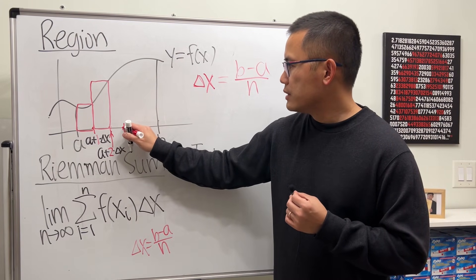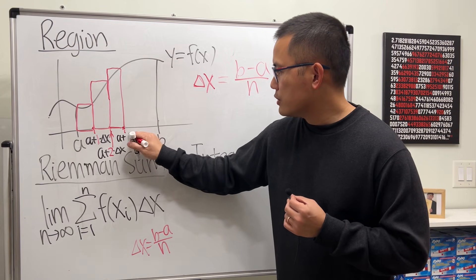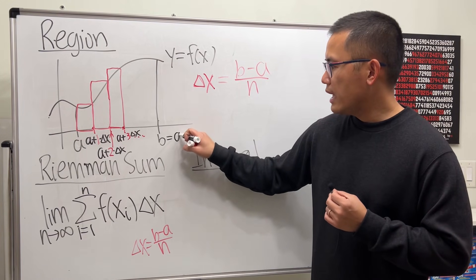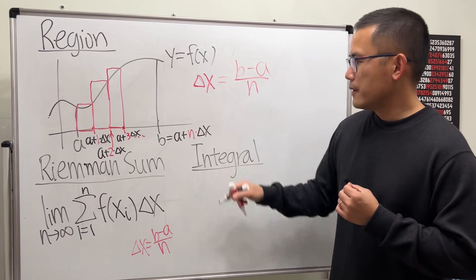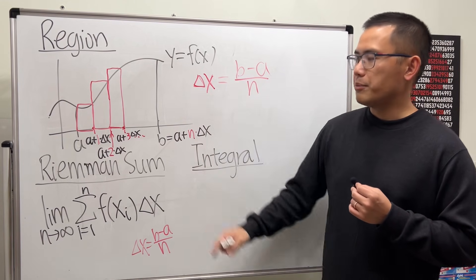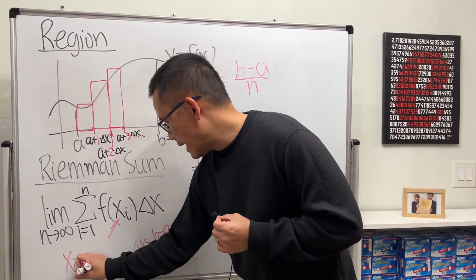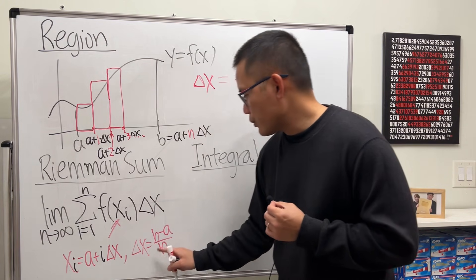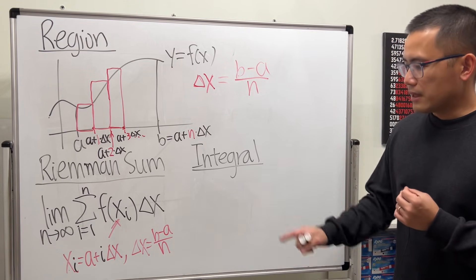Similarly for the next one: use that x-value, go up, draw the rectangle — that's a plus 3 times delta x. And the last one, b, equals a plus n times delta x. If you substitute delta x in, the n's cancel and you just get b. So in general, x_i equals a plus i times delta x. I highly recommend you figure out delta x first — I'll show you examples shortly.